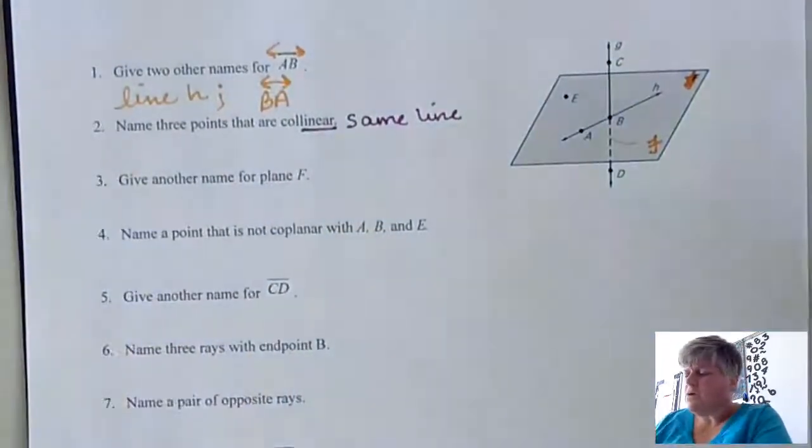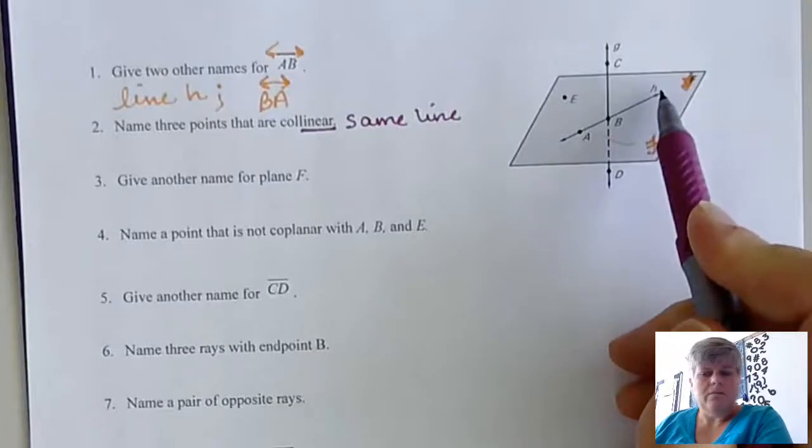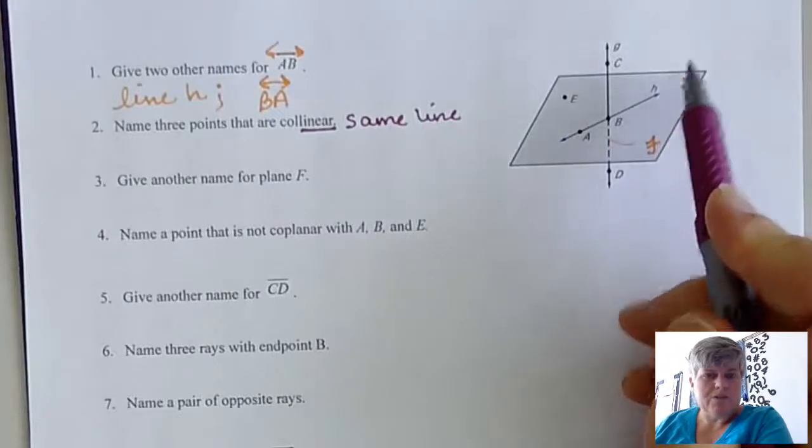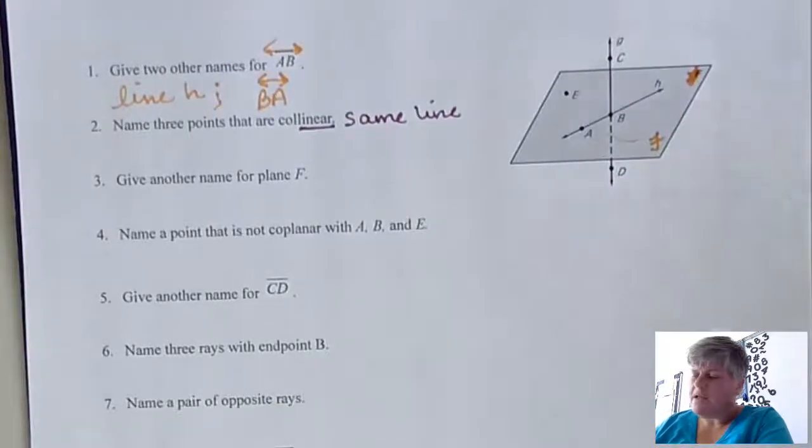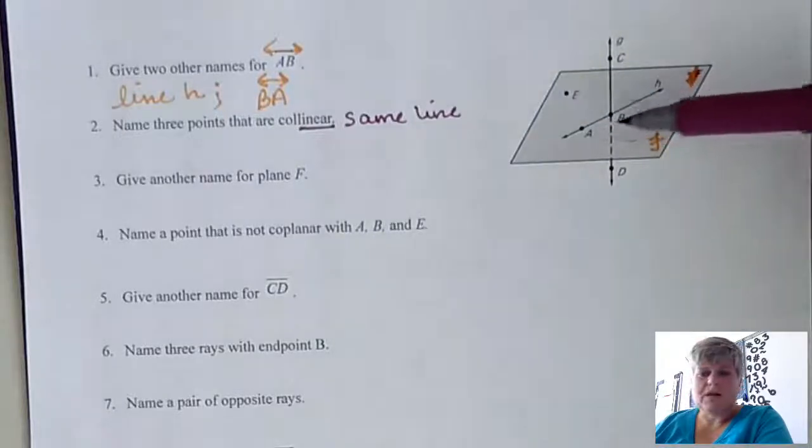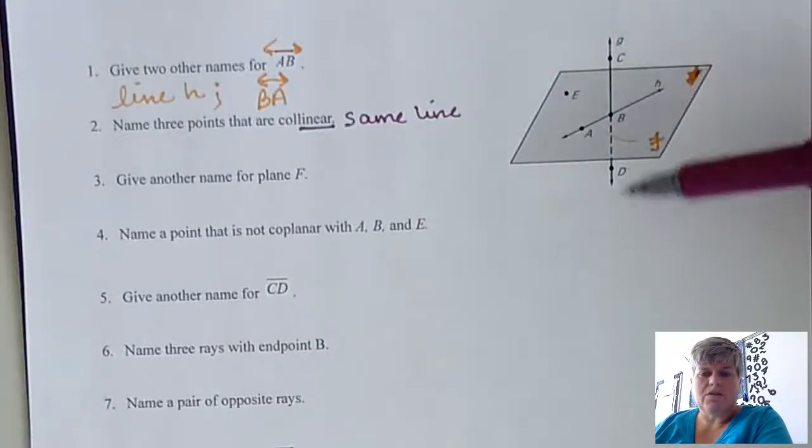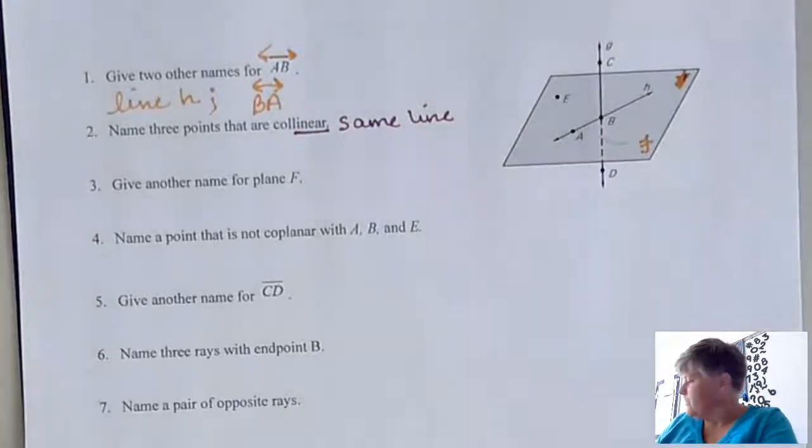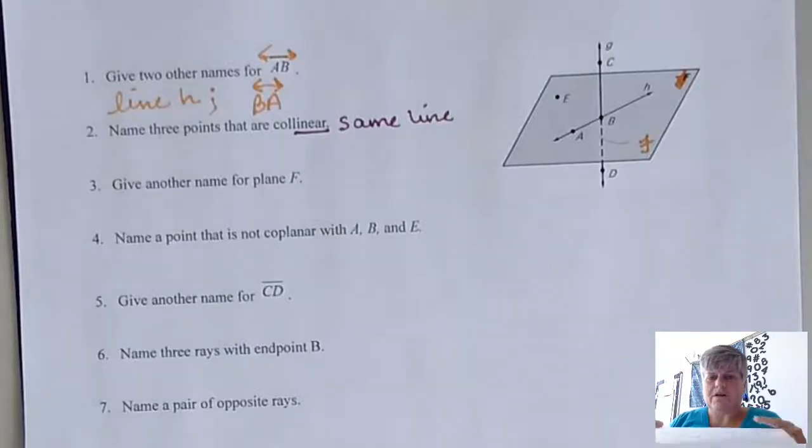So three points that are on the same line. Well, H is not a point. H is simply a name here, it's the label for that line. So we can't use this line that goes this way. But if we look at the line that goes this way, which is C, B, and D. Well, what that looks like is, I know it's just a piece of it, it's got the dotted line.